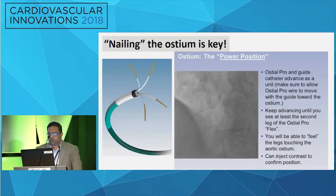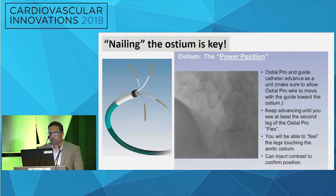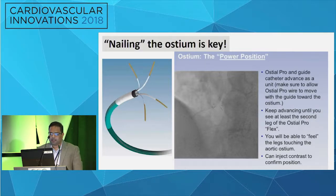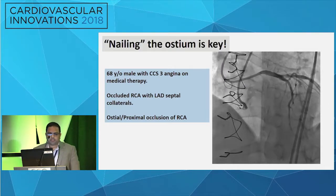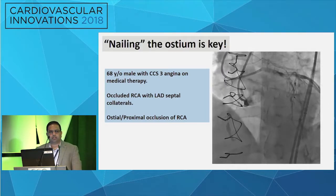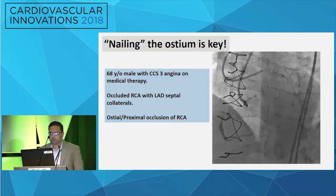How many of you are familiar with the Osteal Pro? The idea is that this is a device with pronged arms — it helps define the aorta-osteal junction and allows you to precisely place your stent at the aorta-osteal position. It hasn't been widely adopted by the community, but it can be helpful. I'm going to show you a couple of cases where nailing the ostium is key, and if you don't, you're really in trouble.